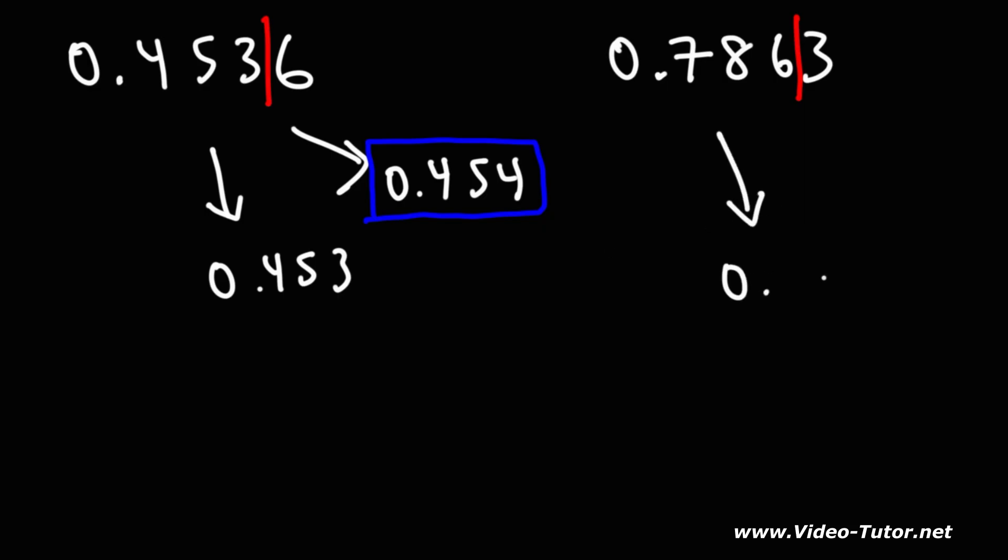So let's put a line here right after the thousandth digit. The two possibilities are we can round down to 0.786, that is keeping the six, or we could round up to 0.787.